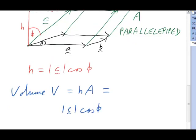The height is length of c times cos phi. And the area is length a, length b times sin theta.